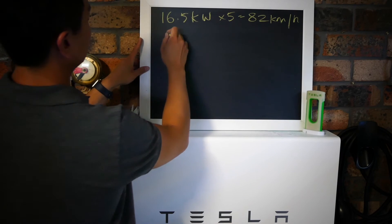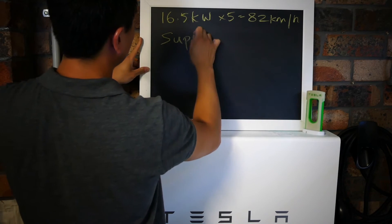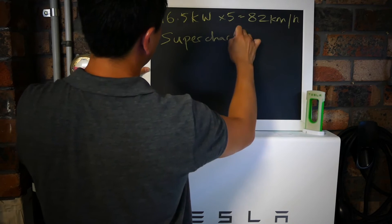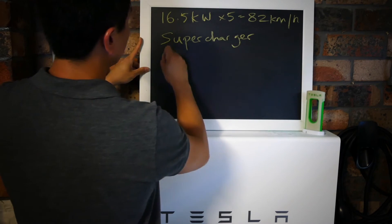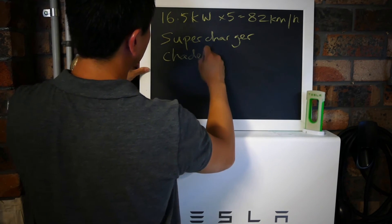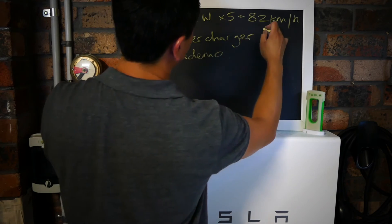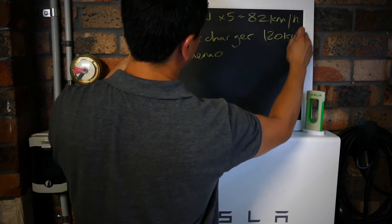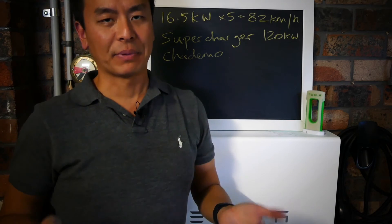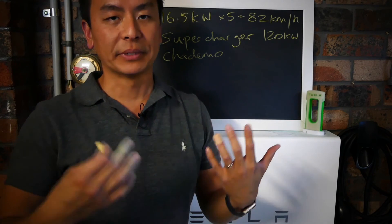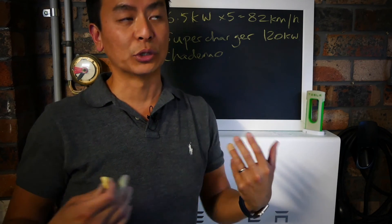So the charging options for the Tesla: Supercharger is 120 kilowatts, the CHAdeMO is next fastest. CHAdeMO instantly is a pun apparently on a Japanese saying which means 'would you like to go for a tea?'